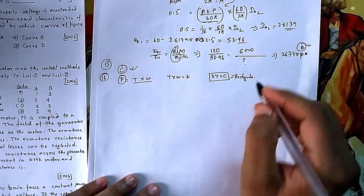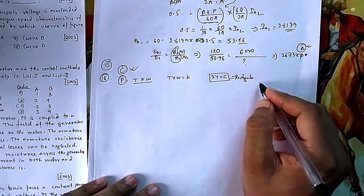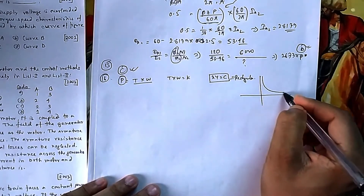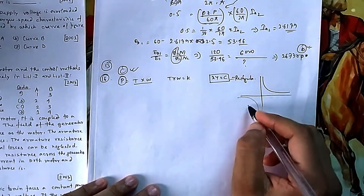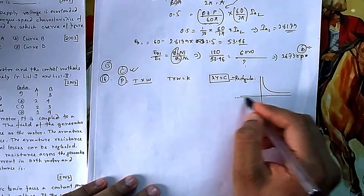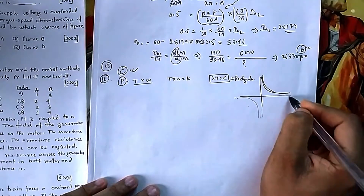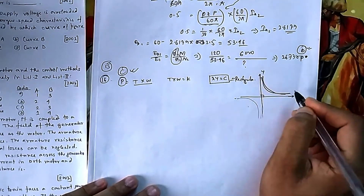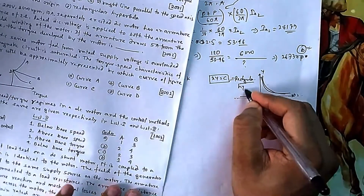You can find this in the math section under coordinate geometry, in the hyperbola section. A rectangular hyperbola has asymptotes at 90 degrees to each other. Since we are not considering the negative portion, we take one branch of the hyperbola. This is known as a rectangular hyperbola, which is your option D.